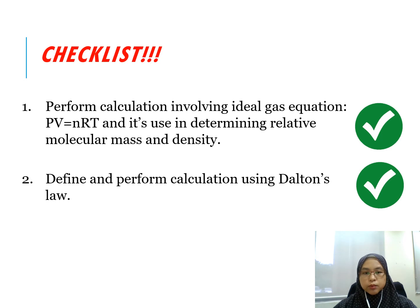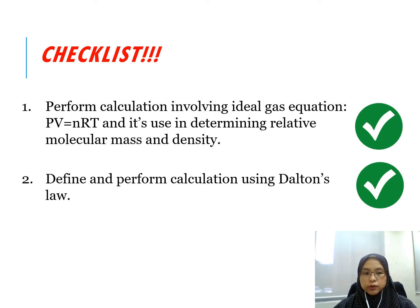In this lesson, we have covered calculations involving the ideal gas equation PV equals to nRT, used in determining relative molecular mass and density. We have also seen how to use Dalton's law of partial pressure to do calculations. See you next time in the next lesson. Thank you.